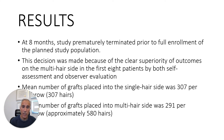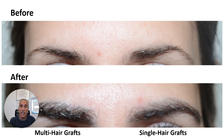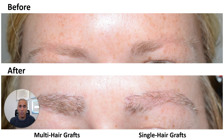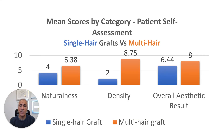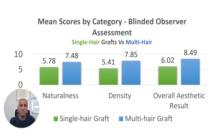The mean number of grafts placed on the single-hair side was 307, while on the multi-hair side it was 291 grafts — close to the same number — but approximately 580 hairs, so almost twice as many hairs. You can see before and after: one side multi-hair, the other single-hair — definitely a fuller look. The multi-hair graft side is visibly fuller. Self-assessment scores for density, naturalness, and overall aesthetic result all showed a higher score for the multi-hair graft. By blinded observer assessment, this difference was even more significant. The overall aesthetic result was definitely better with multi-hair grafts.